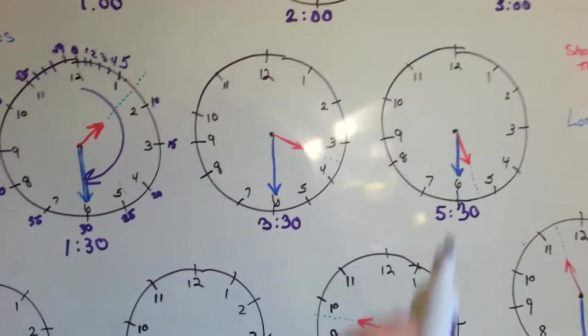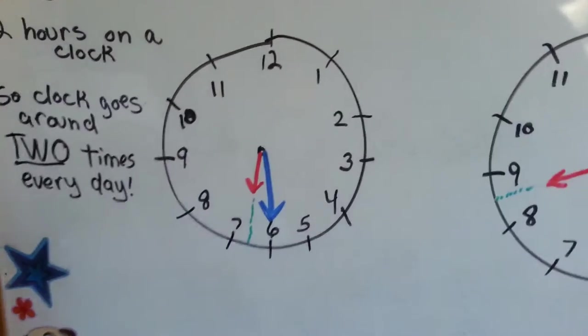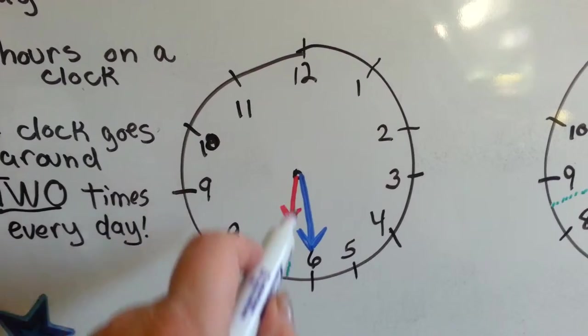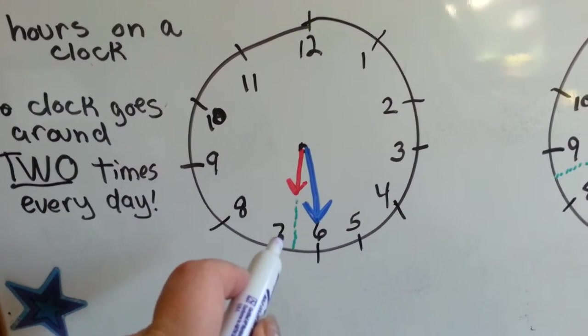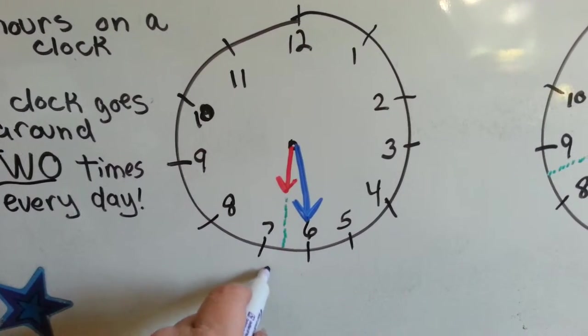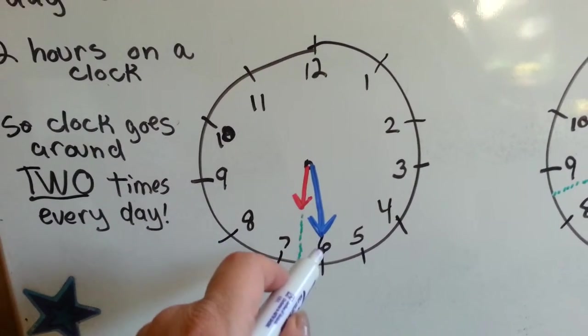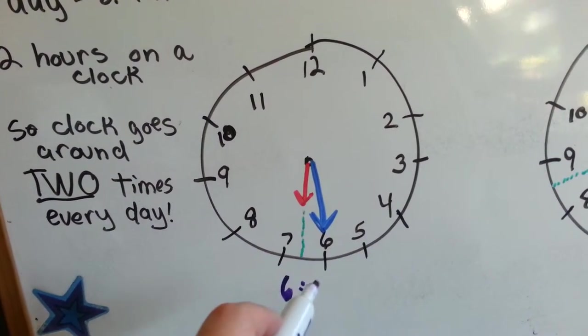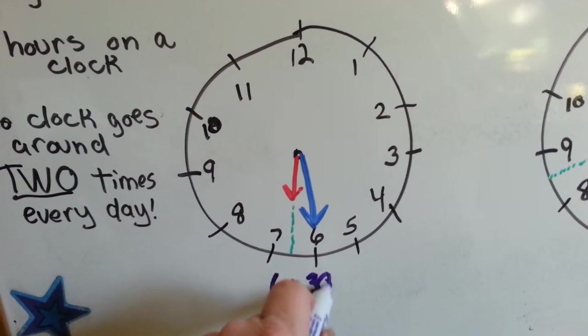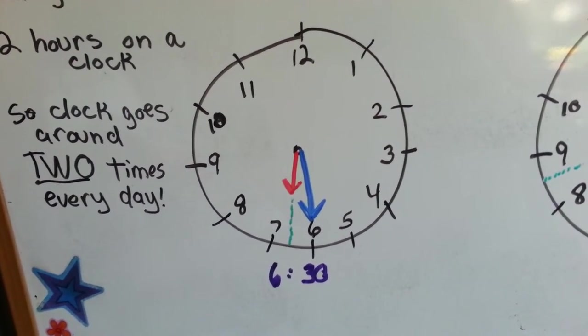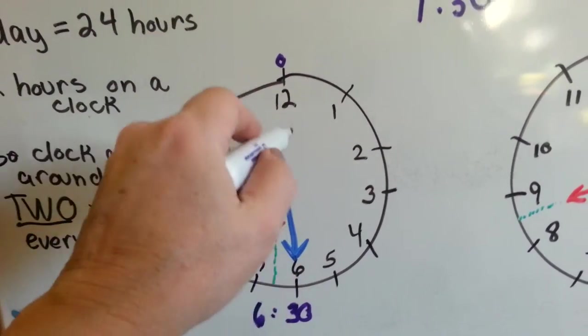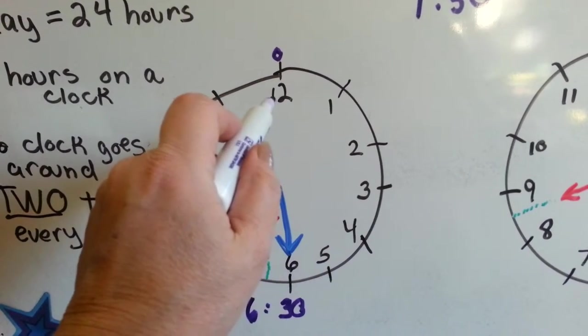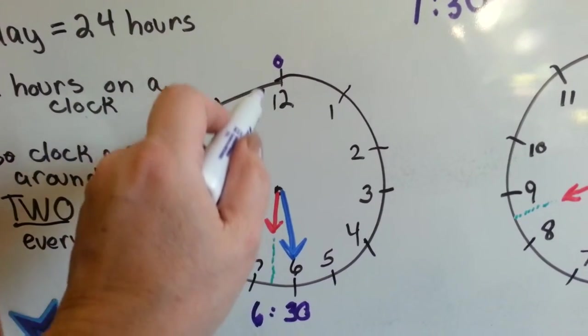1:30, 3:30, 5:30. Let's try this one. The hour hand always goes first. The hour hand is pointing in between a 6 and a 7. We always go with the smaller number, so it's 6, right? And the minute hand is pointing to the 6, which is 5, 10, 15, 20, 25, 30. It's 6:30. You've got to remember that the 12 is the 0. So you don't start counting by 5s until you get to the 1, because you don't say 12 times 5. That's the 60.